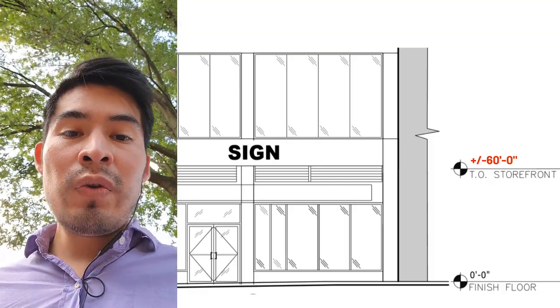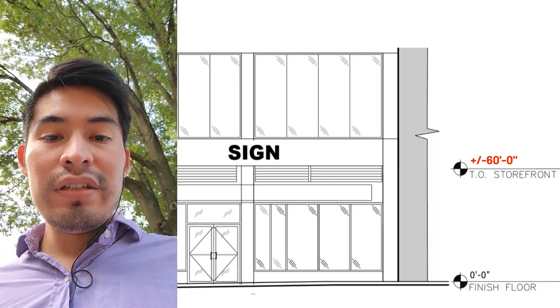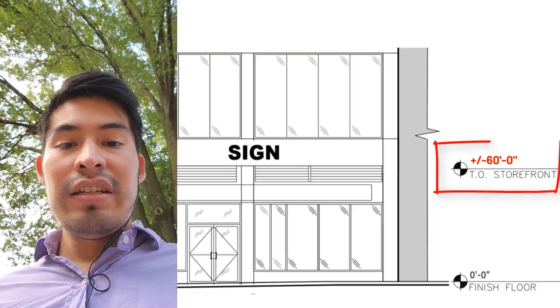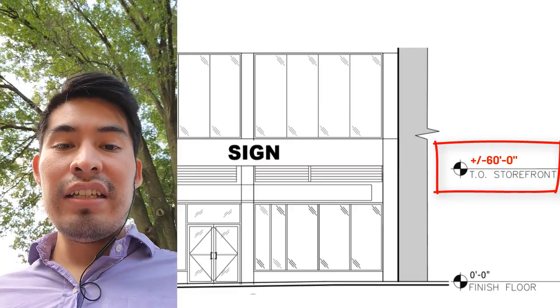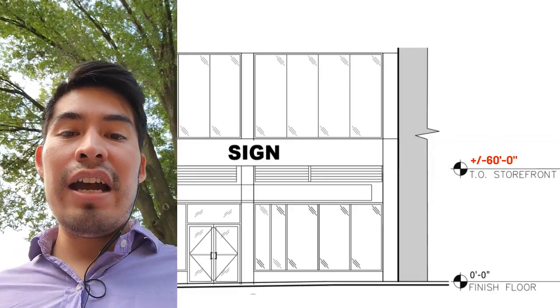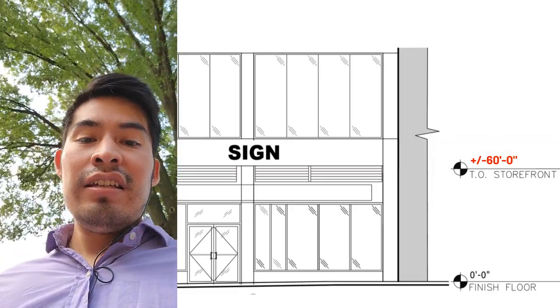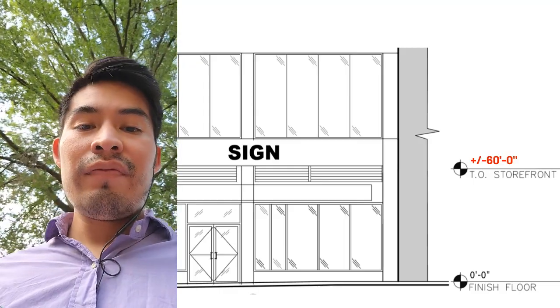Do you see something wrong with this elevation drawing? How in the hell can this building be 60 feet in height? It's definitely a mistake, a mistake that can happen to you and to me.